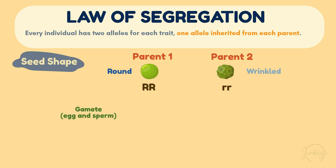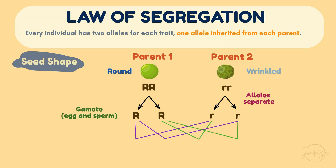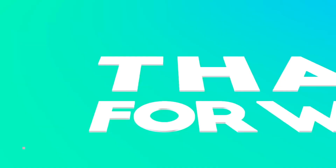However, when gametes such as egg and sperm cells are formed, these alleles separate — each gamete carries only one allele. Then during fertilization, the offspring receives one allele from each parent. That's how genetic combinations such as round or wrinkled seeds are formed.